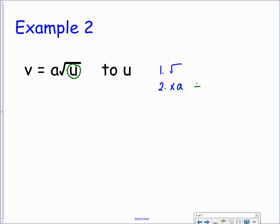We'll start with the multiplication by a, so we need to divide by a. So we'll do that to both sides of the formula. So that will leave us with v over a on the left, and root u on the right.